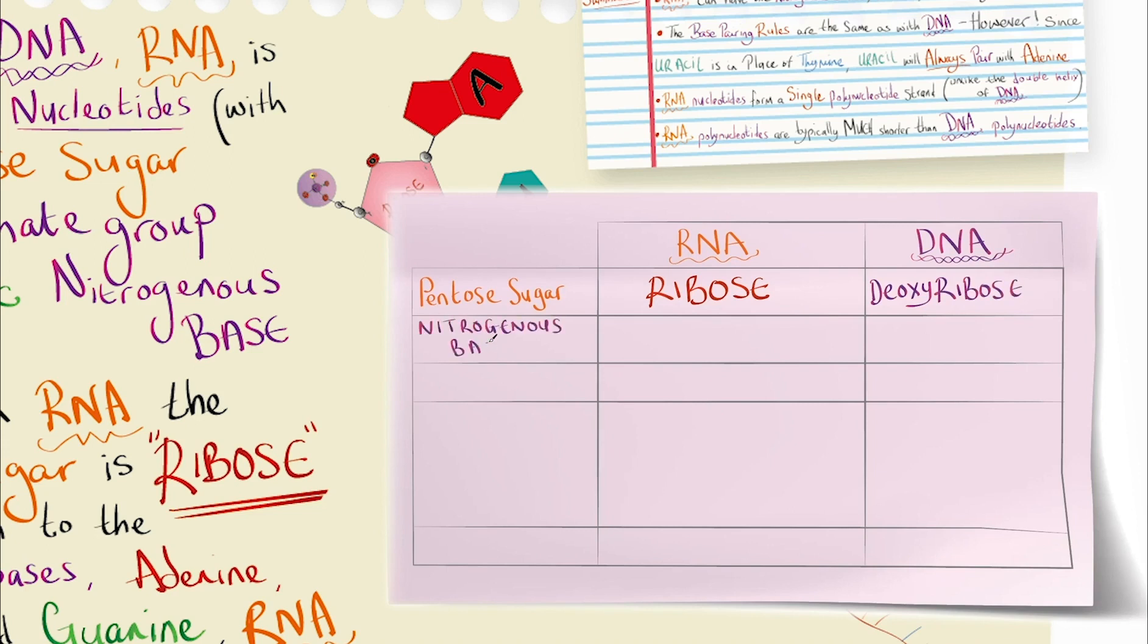The nitrogenous bases found in RNA: adenine, uracil, cytosine and guanine. And those found in DNA are adenine, thiamine, cytosine and guanine.